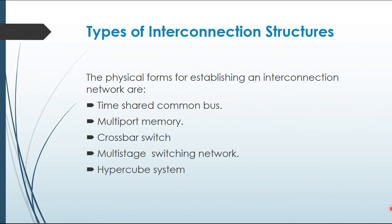There are different types. The physical forms of establishing an interconnection network — when you create an interconnection network, you can use different architectures. There is a time-shared memory bus, multiple-port memory, crossbar switch, multi-stage switching network, and hypercube system.